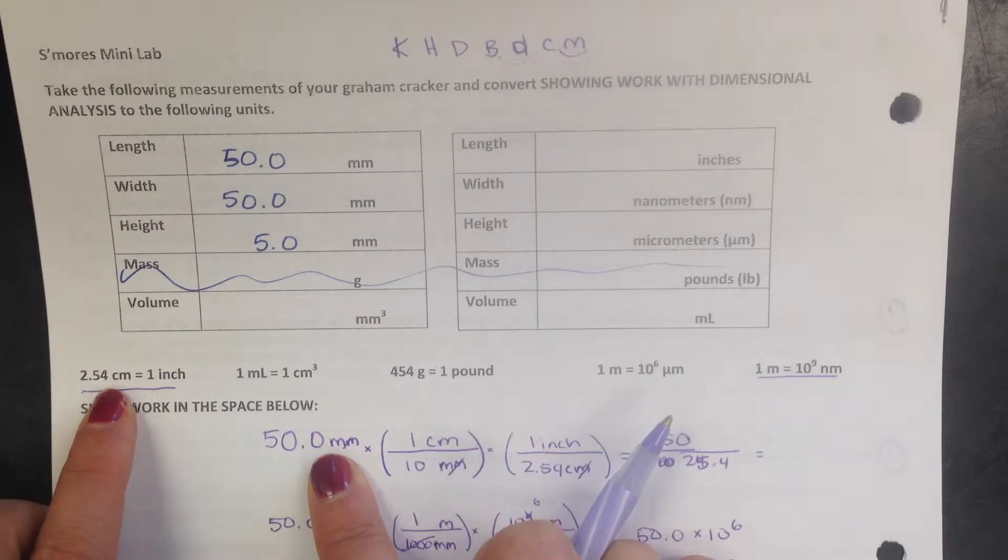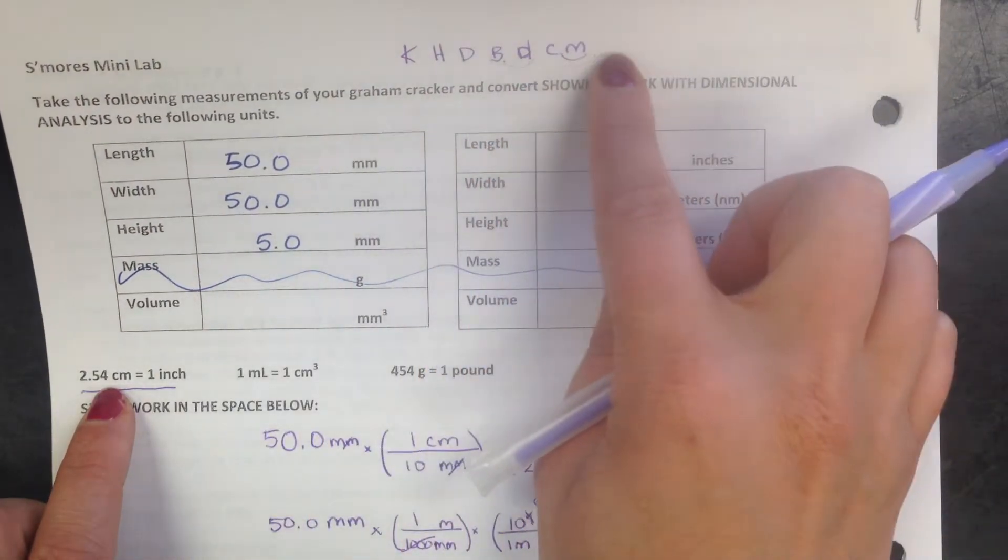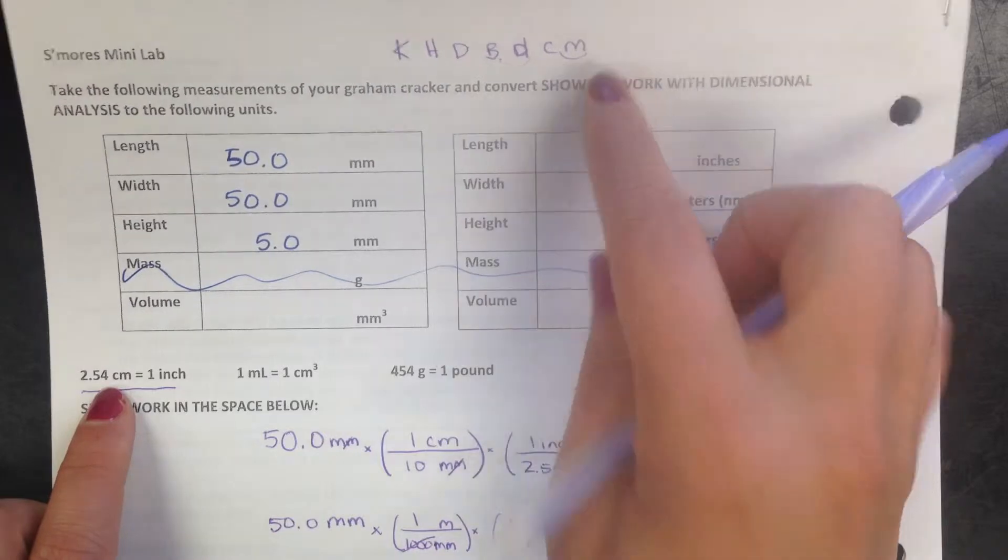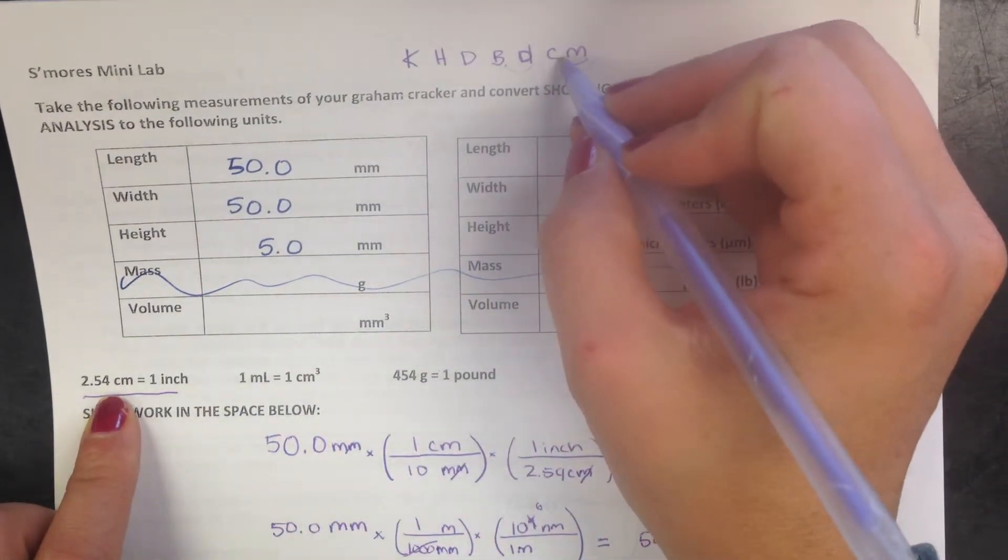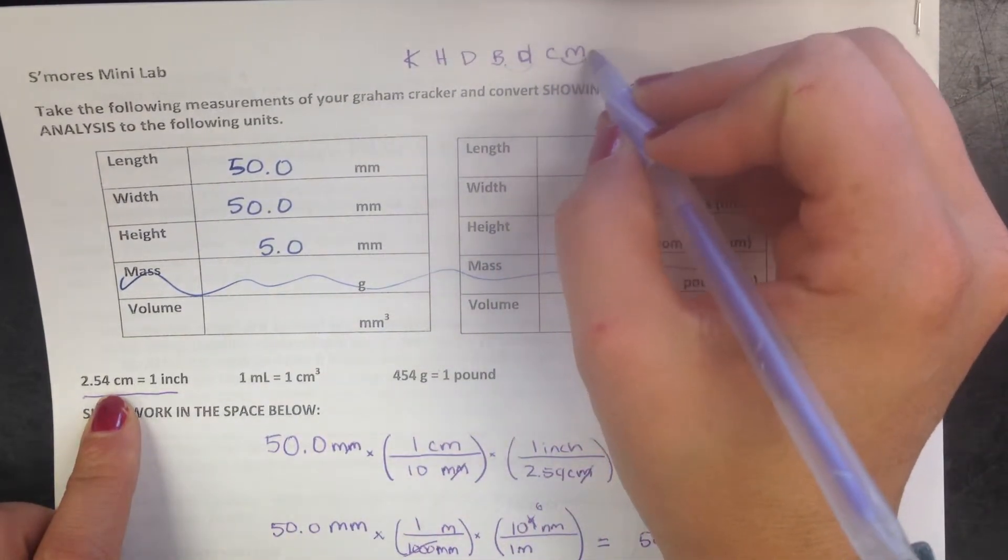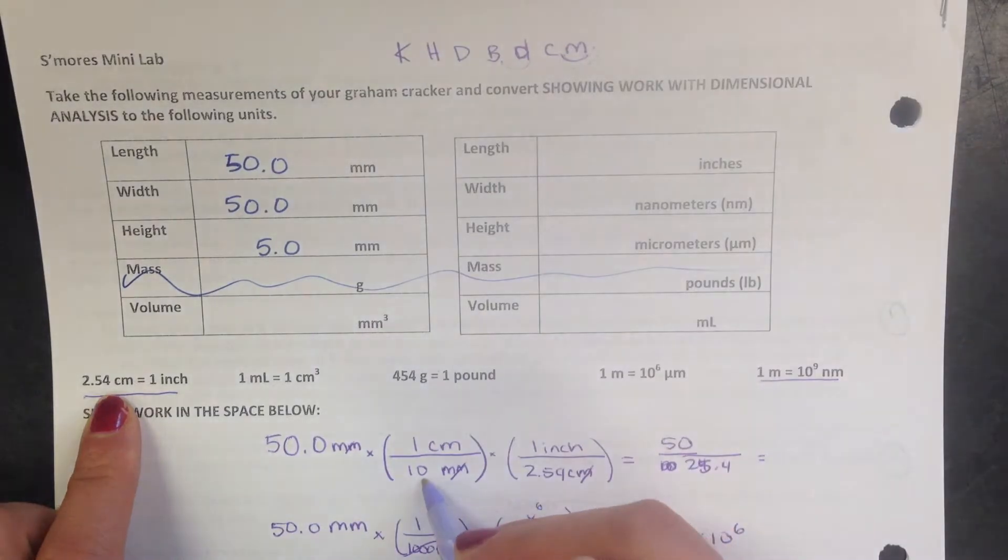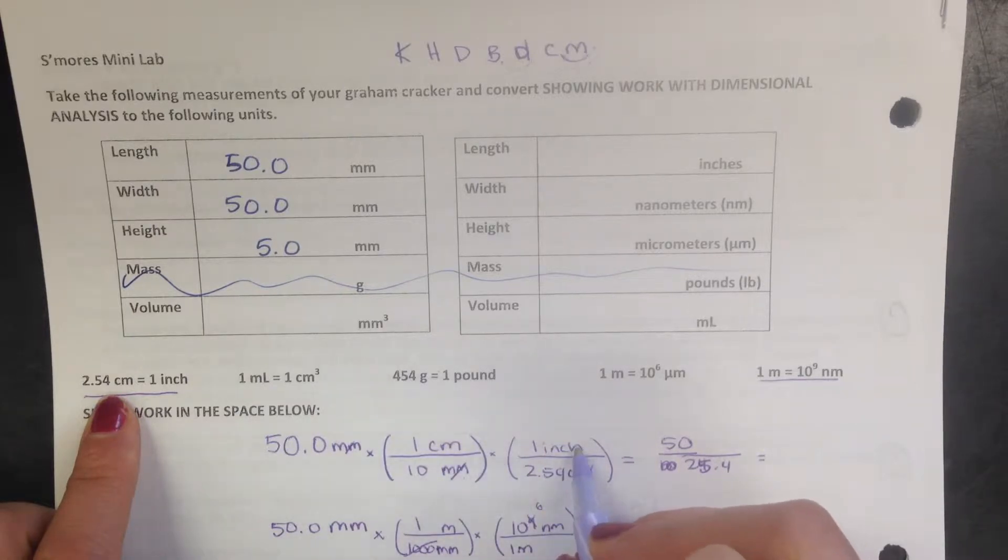To do that, you have to use your King Henry. So here is centimeters, and it's bigger. I only move over one step to get to millimeters. That's how I knew it was 10 millimeters to one centimeter. So down diagonal I put the millimeters, and then it was equal to one centimeter. Then I could put the centimeters and go to inches.